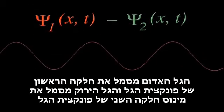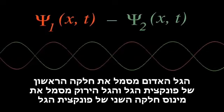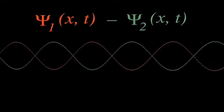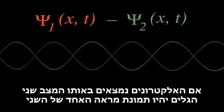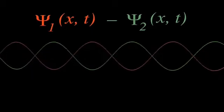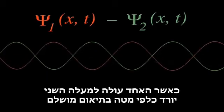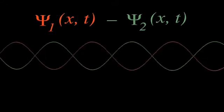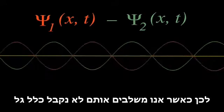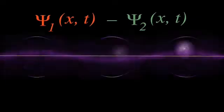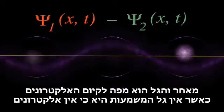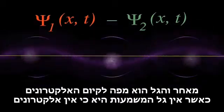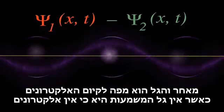Let's let this red wave represent the first part of the combined wave function, and this green wave represent the negative of the second part. If the electrons are in the same state, these two waves will be a mirror image of one another — as one goes up, the other goes down in perfect synchrony. So when we combine them, we get no wave at all. And since the wave is a map of electrons existing at that point, no wave means no electrons.